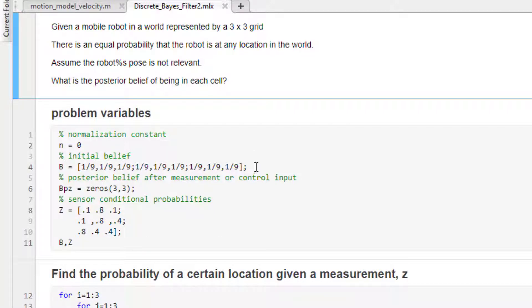Then we have our problem variables. We have our normalization constant set to zero, we have the belief in being in any square within the world or any grid cell as one over nine, and then we're going to have our posterior belief for our next possible location as an initialized three by three matrix with values of zero.